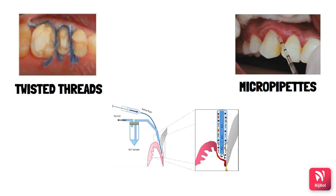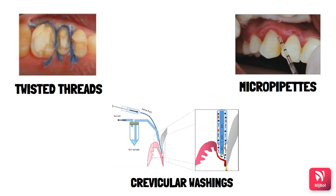The crevicular washings method can be used to study GCF from clinically normal gingiva. An acrylic plate with soft borders covers the maxilla and follows the gingival margins, with four collection tubes from which the gingival crevicular fluid is collected and analyzed.